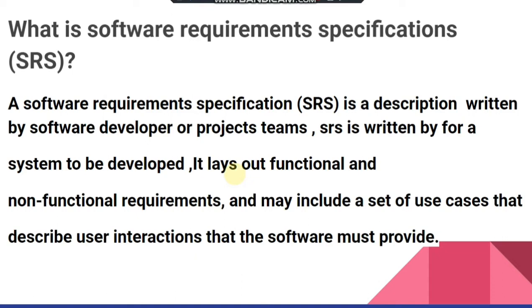A Software Requirement Specification, or SRS, is a description written by a software developer or project team for a system to be developed. It covers functional and non-functional requirements and may include a set of use cases that describe user interactions the software must provide. Everything related to the software — including requirements, use cases, and scope — is defined in the SRS documentation.